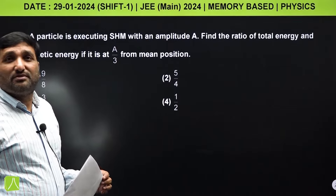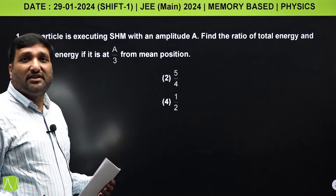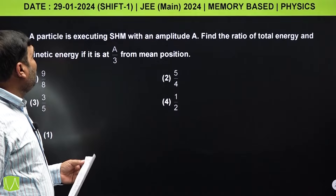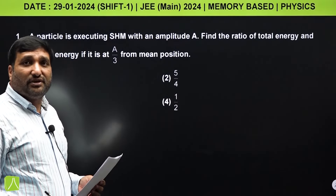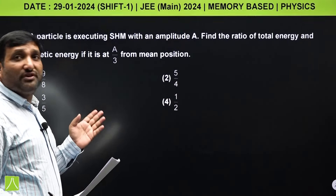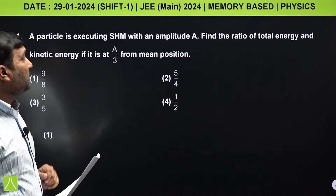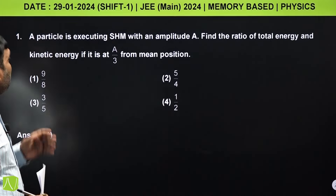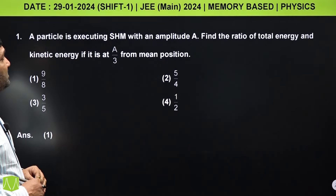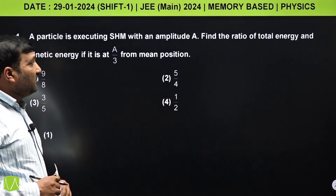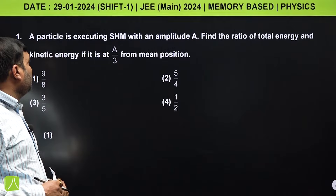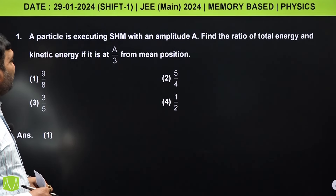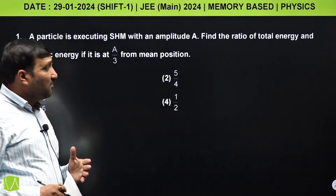I am Manoj Kumar Gupta, senior faculty in the physics department at Resonance, Kota. Today we are discussing the 29th January 2024 JEE Mains shift one physics paper. The first question asks: a particle is executing SHM with an amplitude a — find the ratio of total energy to kinetic energy if displacement is a/3. Very simple question.